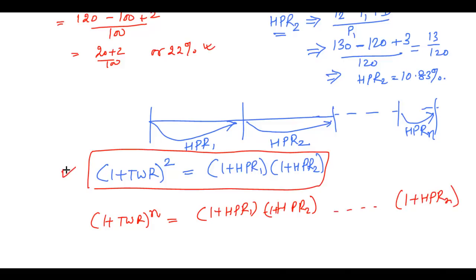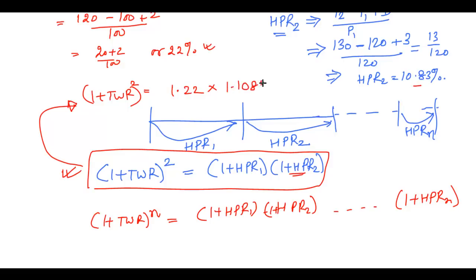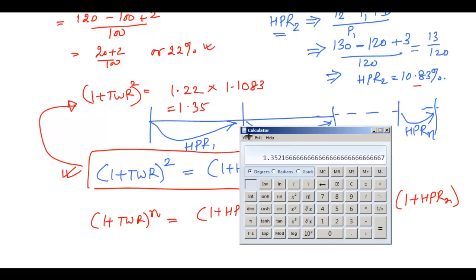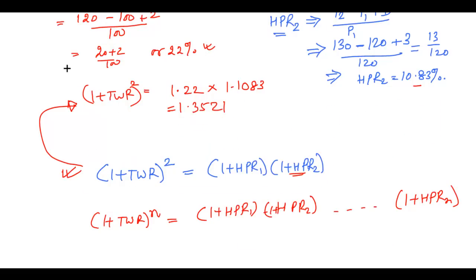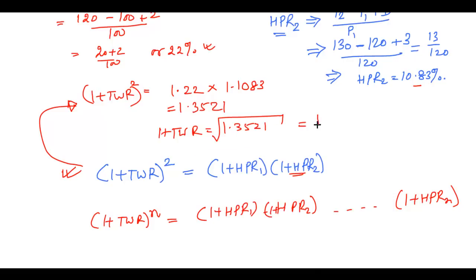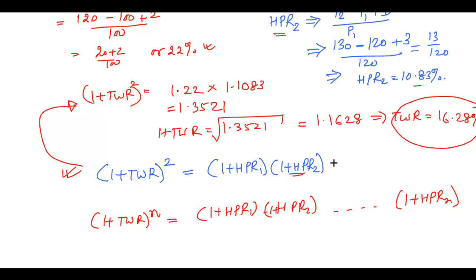Now let's compute the time weighted return. (1 + TWR)² = (1 + 0.22) × (1 + 0.1083) = 1.22 × 1.1083 = 1.3521. Taking the square root: 1 + TWR = √1.3521 = 1.1628, which implies a time weighted return of 16.28%.